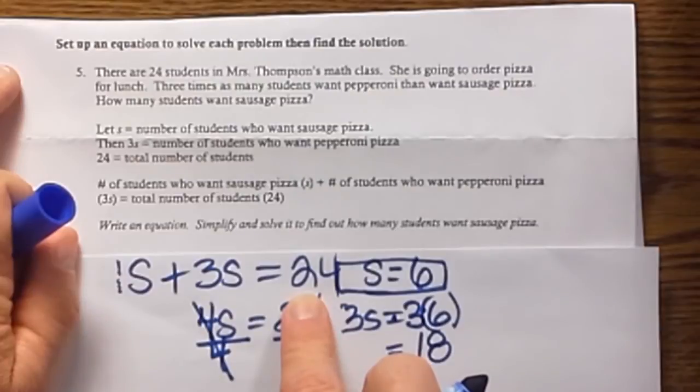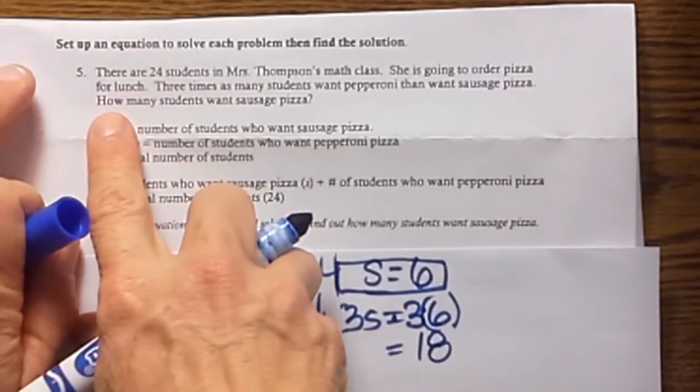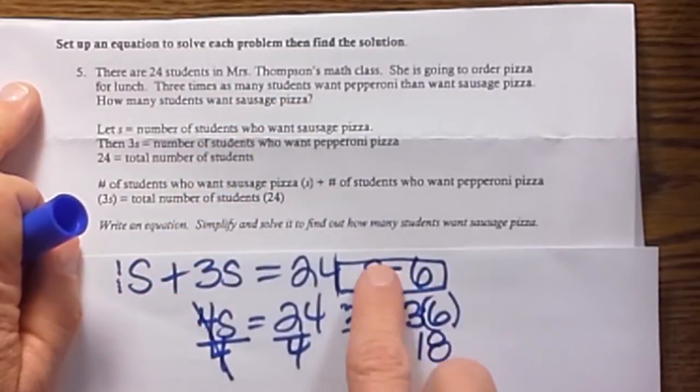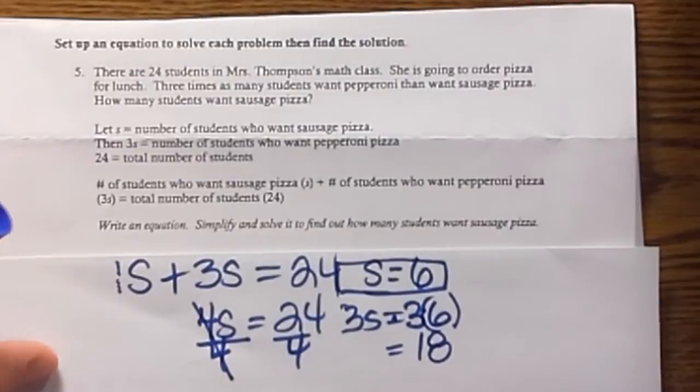Now let's go back and make sure we answer the question. The question says, How many students want sausage pizza? Well the answer would be 6. 6 students.